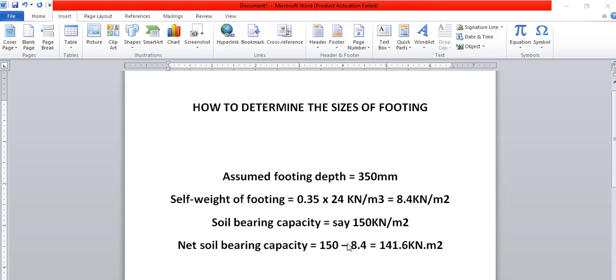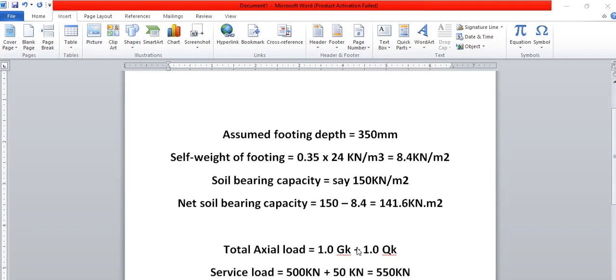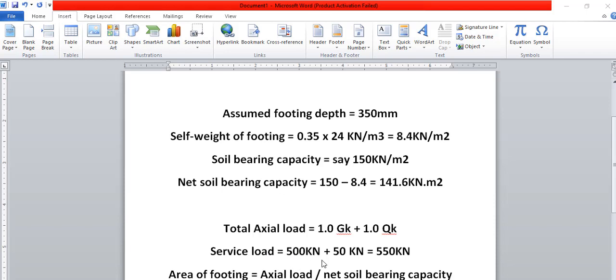Now we get to the load, and please pay attention: in dealing with footing, in determining the size of the footing, what you use is your service load or unfactored load. What we've calculated as our dead load on that column is 500 kN, while the live load is 50 kN. If you add both of them, you get 550 kN.